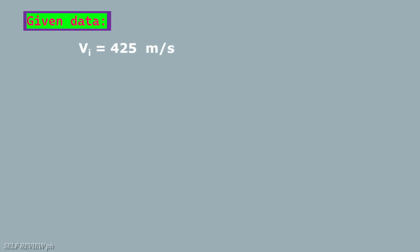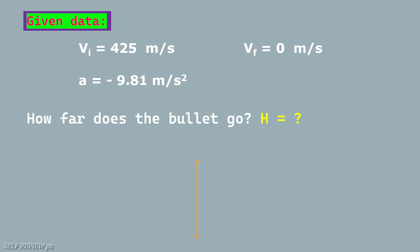Given data: initial velocity of 425 meters per second, final velocity of 0 meters per second, acceleration due to gravity of negative 9.81 meters per second squared. How far does the bullet go?